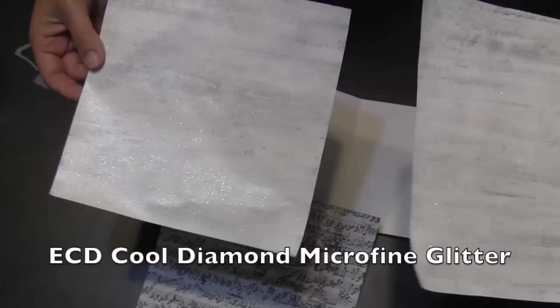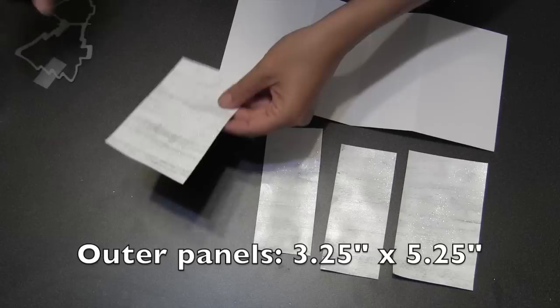Now if you plan on wallpapering your panels, it's good to do that before you die cut, so let me show you how I did it for my specific card. I wanted to tone down the music notes on this piece of white music paper, and so what I did is I just painted it with some white acrylic paint, and while the paint was wet, I dropped some cool diamond microfine glitter into the wet paint and just let it dry.